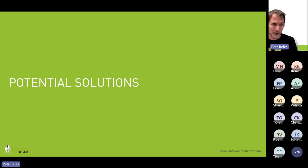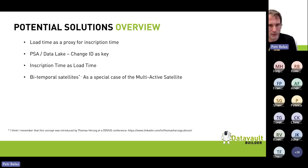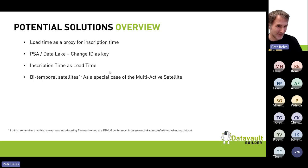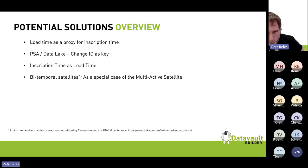What are the solutions for loading the inscription time from your source system? We could say the load time is just the same as the inscription time if the difference is very small. Second, we could create a persistent staging layer between the source system and our data warehouse core, storing all changes and regularly taking the latest status. Another idea is to throw away the load time and write the inscription time in the column where the load time was foreseen. And the last solution I'll show is the bi-temporal satellite — an idea I believe Thomas Herzog once presented at a Data Vault user group — which I didn't understand until I actually had these problems.